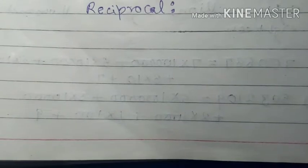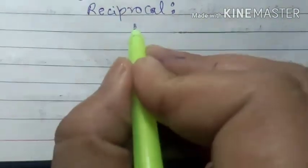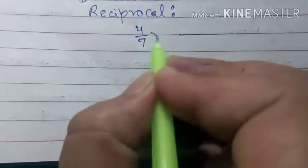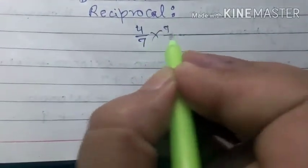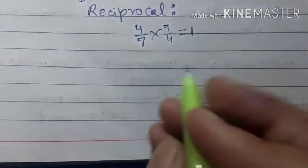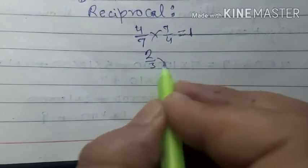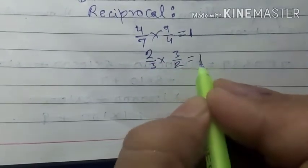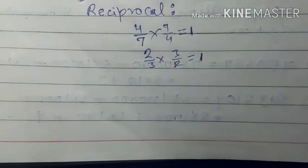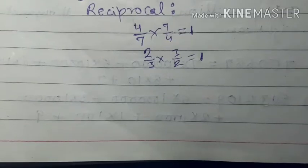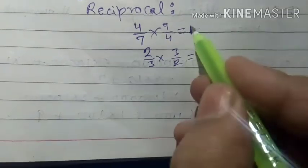What are reciprocals? Students, you can see here — if we multiply 4 upon 7 by 7 upon 4, then the result is 1. And also if we multiply 2 upon 3 by 3 upon 2, then the result is 1. So students, we can say two non-zero numbers are called reciprocal of one another if their product is 1.